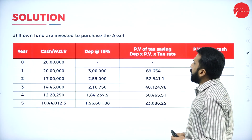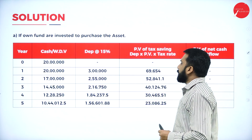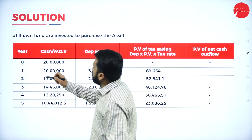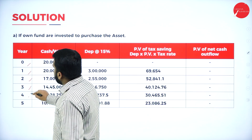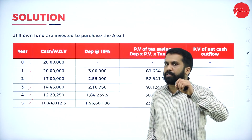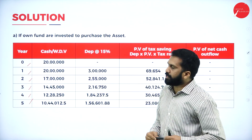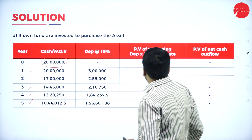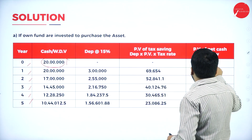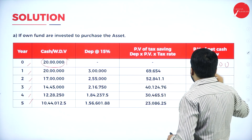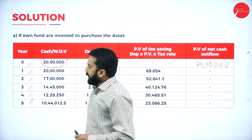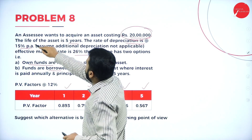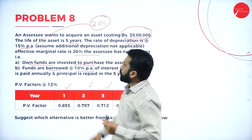If own funds are invested to purchase the asset, your year column will be 0, 1, 2, 3, 4, 5. Your cash WDV: as you know, if it is own fund, 20 lakh is your investment. Your outflow you can mention it as 20 lakh. Now your 20 lakh — you are supposed to calculate depreciation. What is the depreciation? 15% along with 20%.